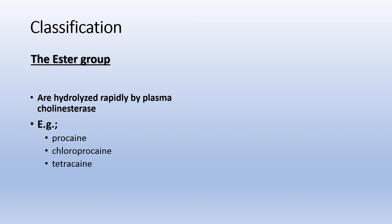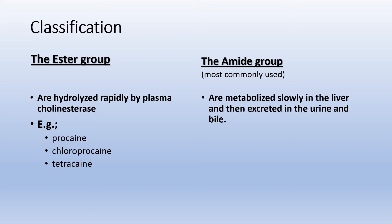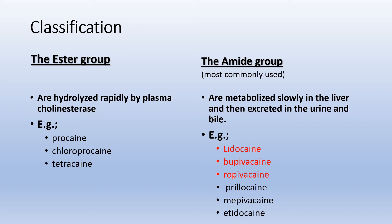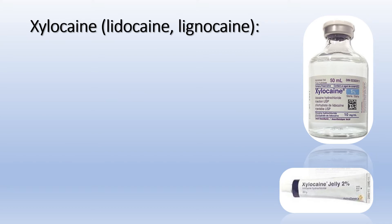Classification: the ester group are hydrolyzed rapidly by plasma cholinesterase — examples include cocaine, chloroprocaine, and tetracaine. The amide group, which is more commonly used in practice, is metabolized slowly in the liver and then excreted in urine and bile — examples include lidocaine, bupivacaine, ropivacaine, and xylocaine, also known as lidocaine or lignocaine.